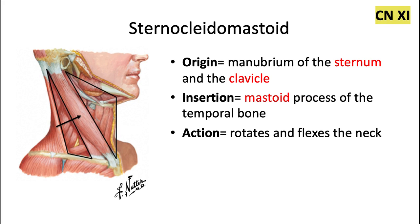And we have two more muscles to talk about, these being our two big boundary muscles of the neck. The sternocleidomastoid muscle originates from the manubrium of the sternum and the clavicle as well, and it inserts into the mastoid process of the temporal bone.